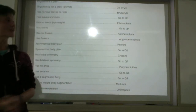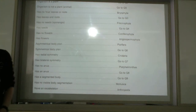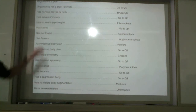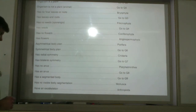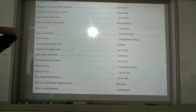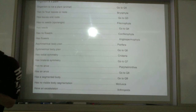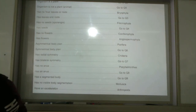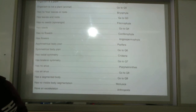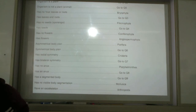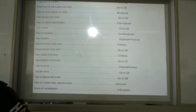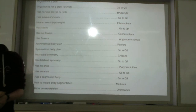Finally, to organize all of these species we can use something called a dichotomous key. For example, classifying an arthropod: first we ask, is it a plant or not a plant? Not a plant, so go to question 5. Does it have an asymmetrical or symmetrical body plan? It has bilateral symmetry, so go to question 6. Does it have radial or bilateral symmetry? Bilateral, go to question 7. Does it have an anus? Yes, go to question 8. Does it have a segmented body? Yes — it's an arthropod. And that's the presentation. Thank you!